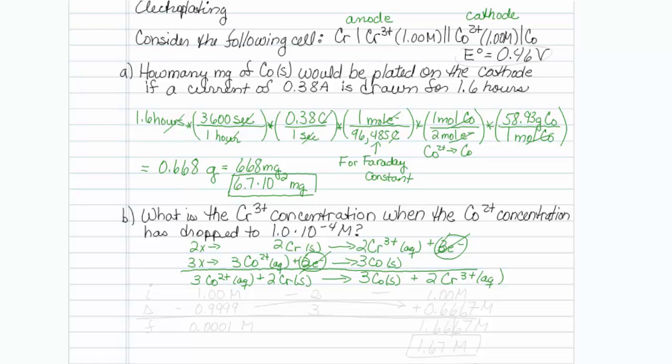Now initially, looking at our conditions in the top, it looks like the cobalt starts out at 1 molar, and the chromium starts out at 1 molar, and these I don't care about, they're solids.